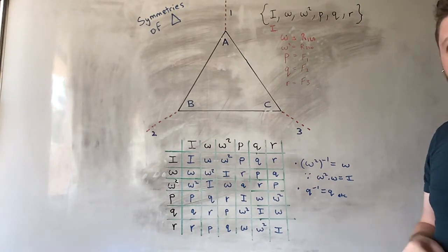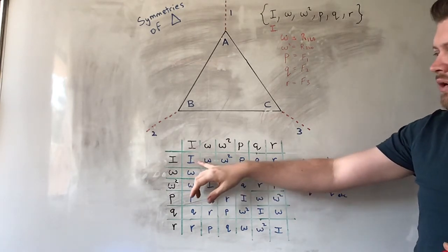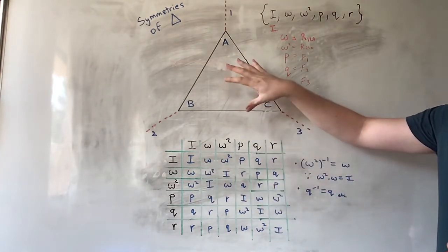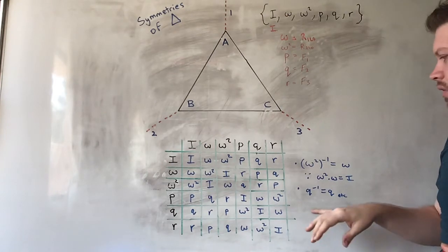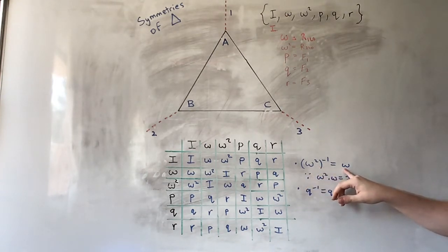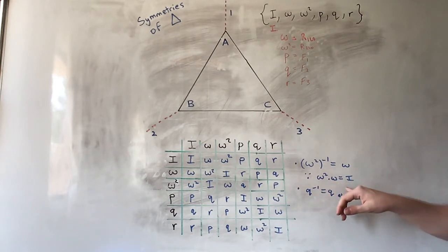The only other situation we have to think about is the rotation situation. So, in this case, we touched on it a few moments ago, but omega squared is the inverse of omega. This is how we would write that.